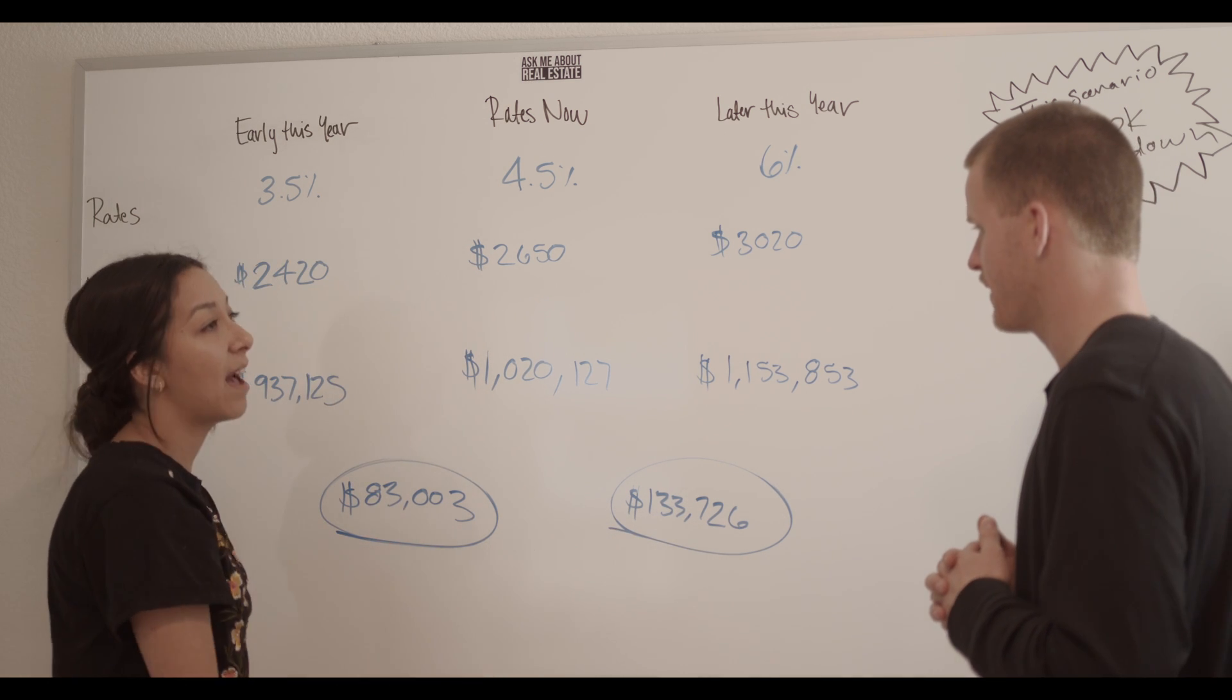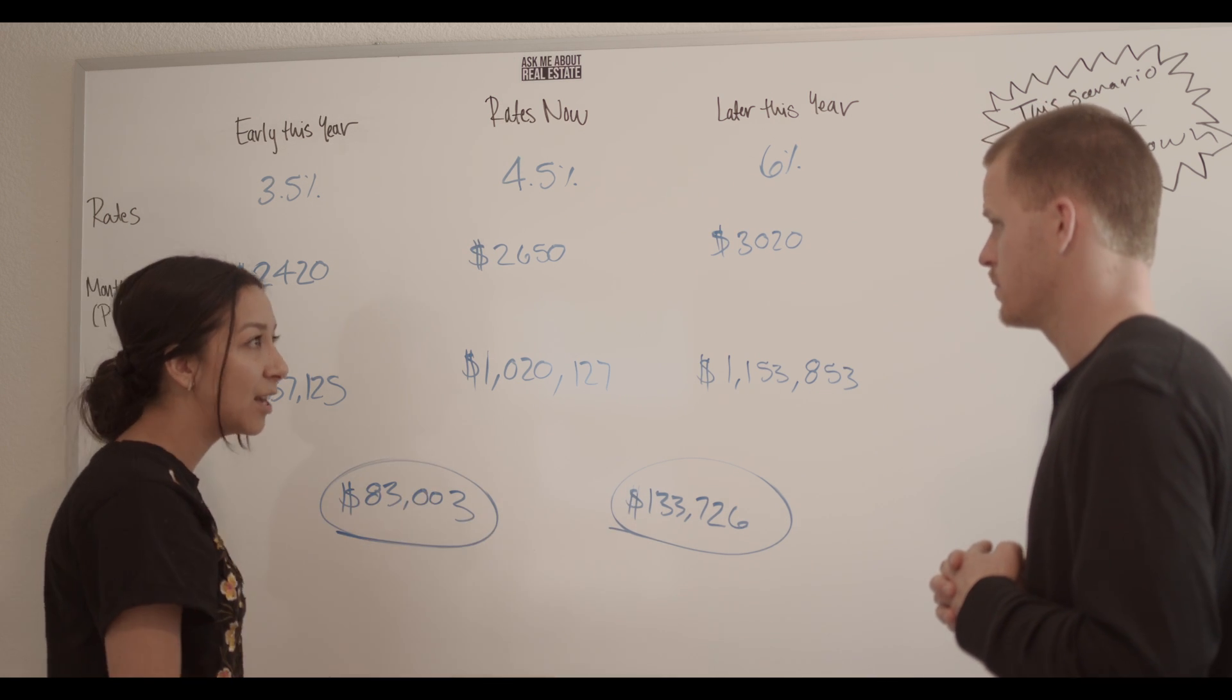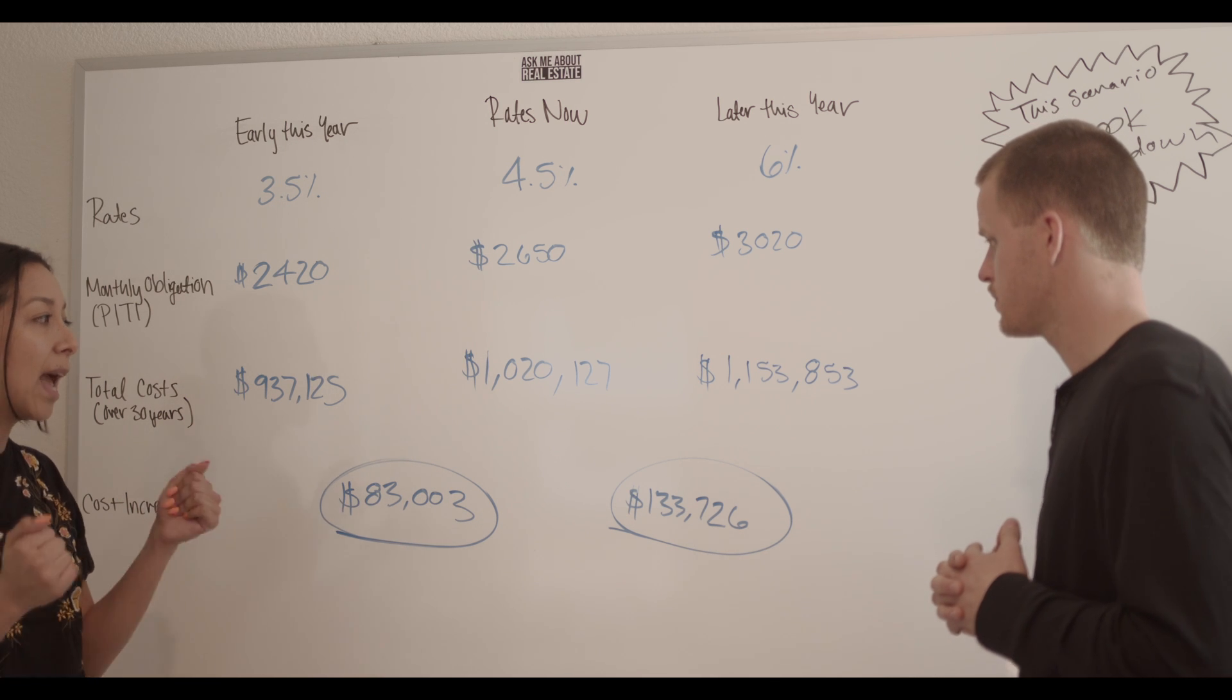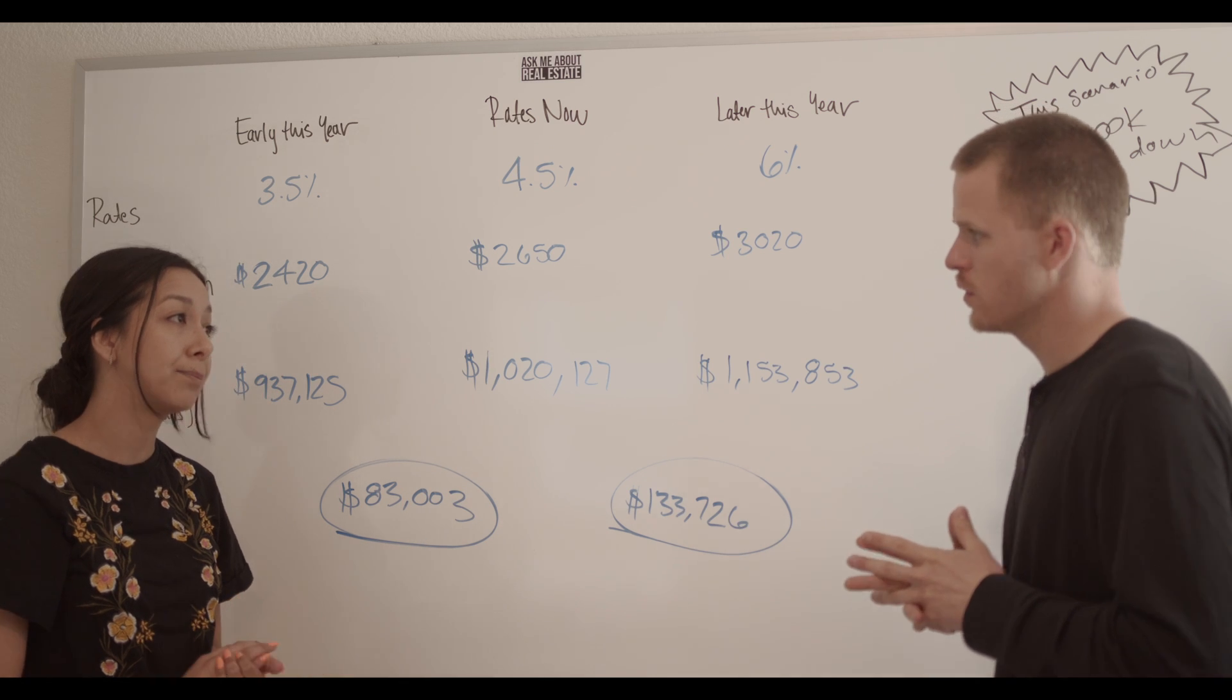Right. And how many down payments is that? You can put 20% down for another home and continue building that wealth rather than sitting and waiting. So really, these numbers are the cost of waiting.